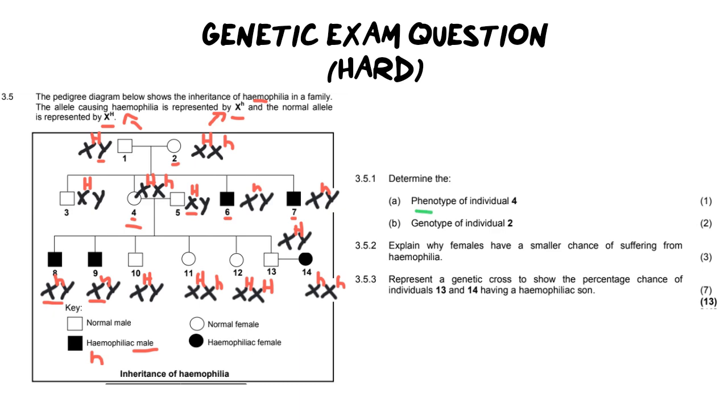So here we see the phenotype of individual four. So here is individual four. We know that pheno means physical and she is a normal female. She doesn't have hemophilia. The second question says the genotype of individual two. And conveniently, we have already calculated it so we can write that down.